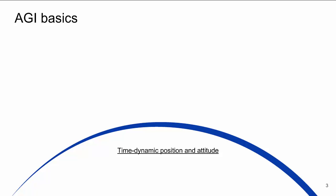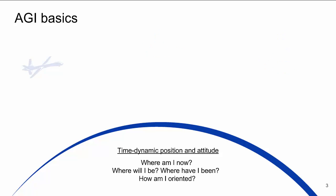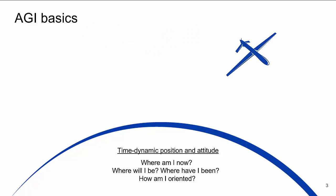The first question you may want to answer is: where am I now? And then, where will I be in the future, or where was I in the past? Next, you'll want to understand your orientation or attitude — how am I oriented?